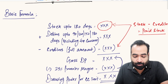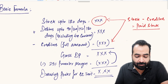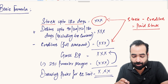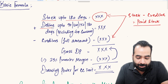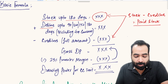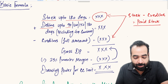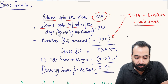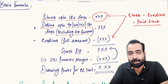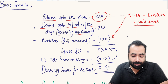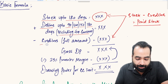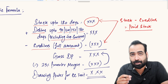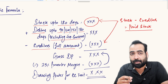The basic formula from the previous video: stock should not be more than 180 days old. Debtors or receivable amounts from customers should not be older than 90, 120, 150, or 180 days as the case may be, and should exclude group concerns receivable amounts. Creditors need to be considered at full amount.